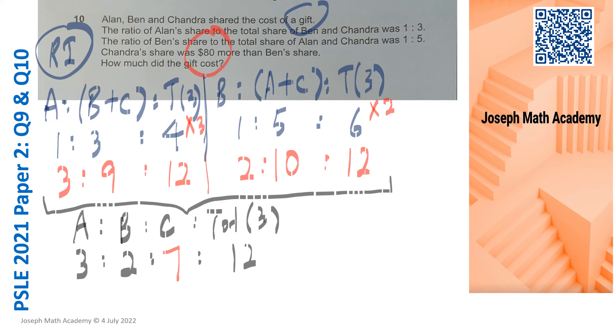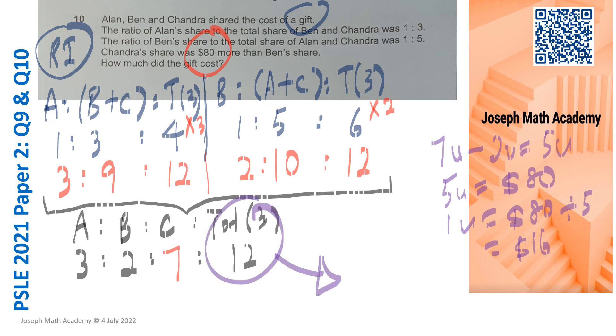This $80 is comparing Chandra's and Ben's share. Chandra contributed 7 units. Ben contributed 2 units. So the difference is 5 units. And 5 units definitely must be $80. So 1 unit will be 80 divided by 5, which is $16. We are reaching the end of the question. How much did the entire gift cost? The entire gift is here. So 12 units must be 12 times $16. And we get $192. Question 10 is done using repeated identity.